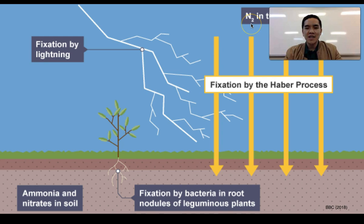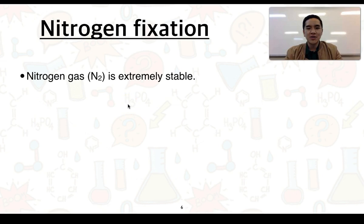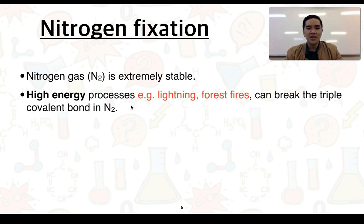The process of converting nitrogen gas in the air to a form suitable for plants to take up is called nitrogen fixation, and this can occur through various natural processes. The first is through high-energy processes like lightning, but it can include man-made processes like the Haber process, and another natural process would be fixation by bacteria. We're going to consider the natural processes in this video. Nitrogen gas is an extremely stable molecule because two nitrogen atoms share a very strong triple covalent bond, meaning we need high-energy processes like lightning or forest fires to break it.